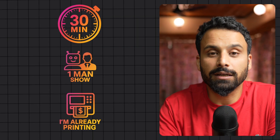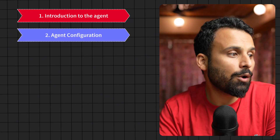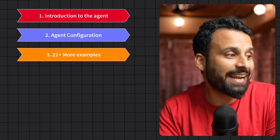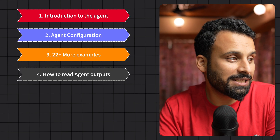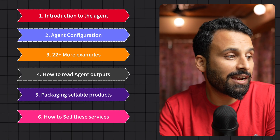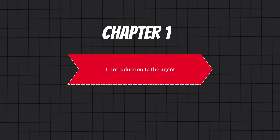Imagine starting a freelancing or consulting business in just 30 minutes, powered by just one AI agent that can make money from week one. You don't need to imagine because it's possible in the agentic world we live in now. In this video, I'm going to show you step by step how I created a business idea using ChatGPT agent mode. Here is what we will cover: introduction to the agent, how to configure an AI agent with a real working example, 22 ready-to-use AI agent setups you can turn into a freelancing business, the kind of outputs you can expect, how to transform these outputs into sellable products, and finally how to pitch these services to clients and win business.